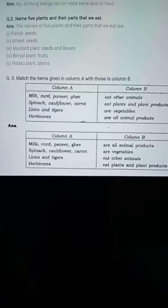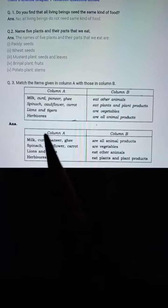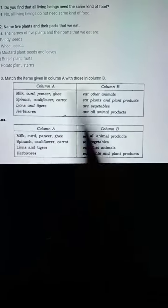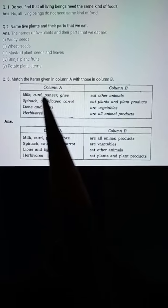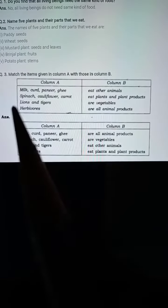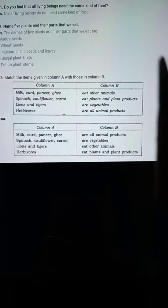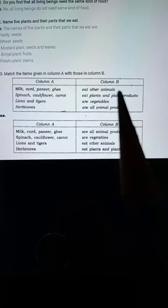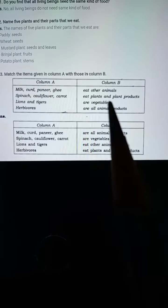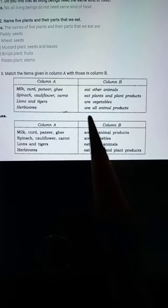Now, next one is match the items given in column A with those in column B. Column A: milk, curd, paneer, ghee, spinach, cauliflower, carrot, lions, tigers, herbivores. Column B: eat other animals, eat plants and plant products, are vegetables, are all animal products.